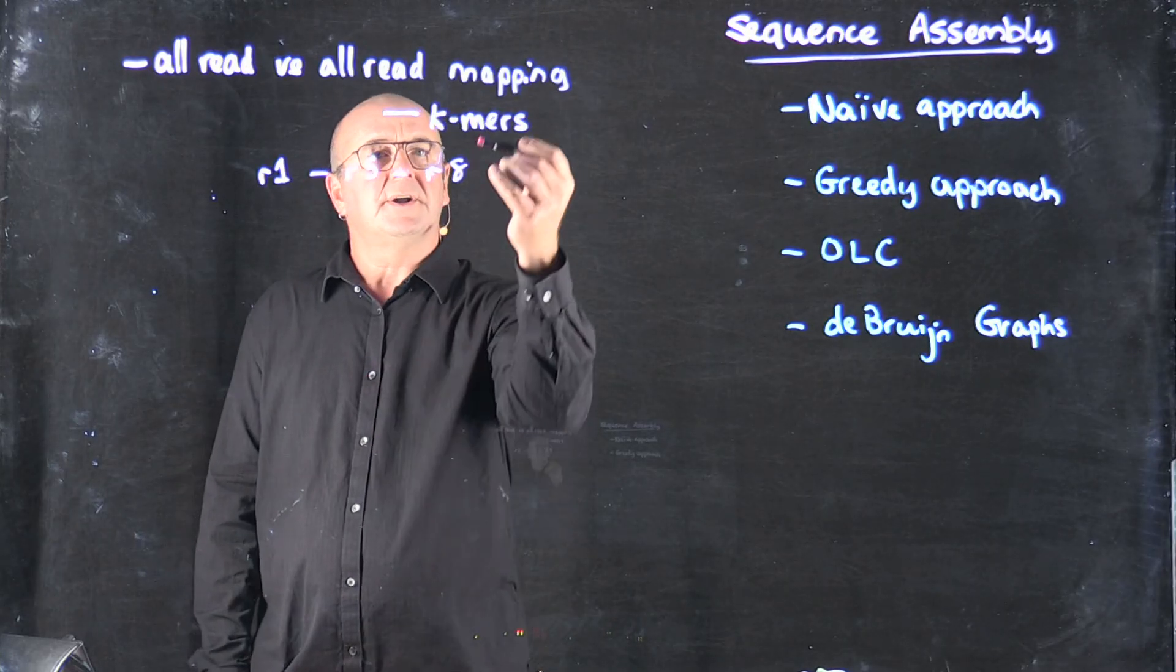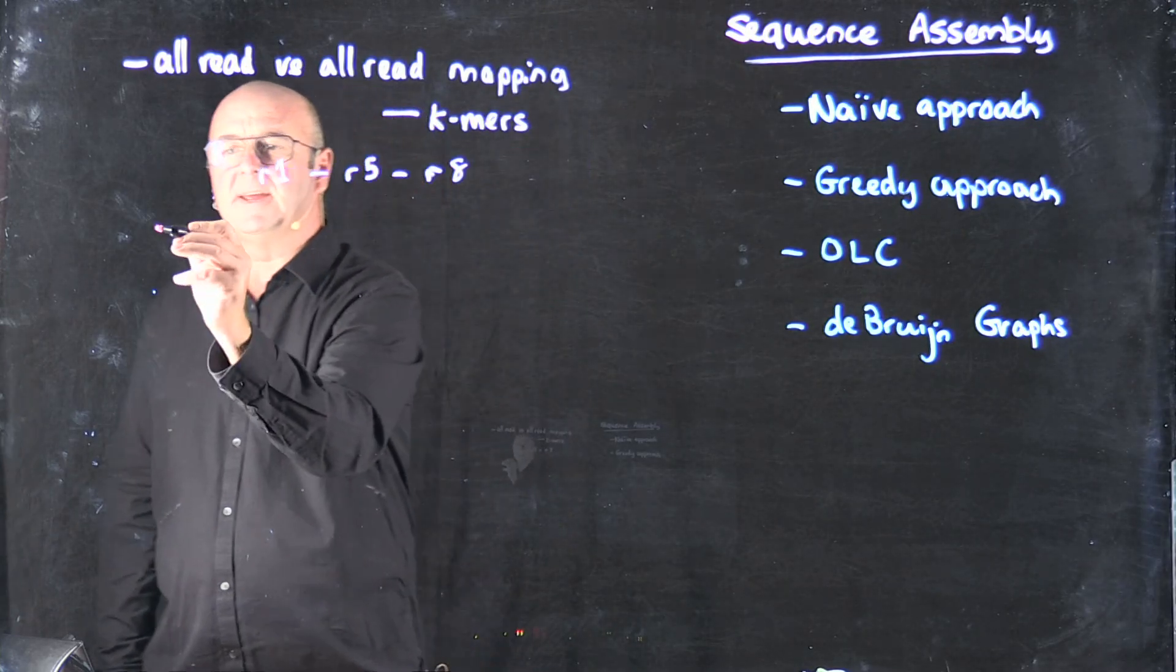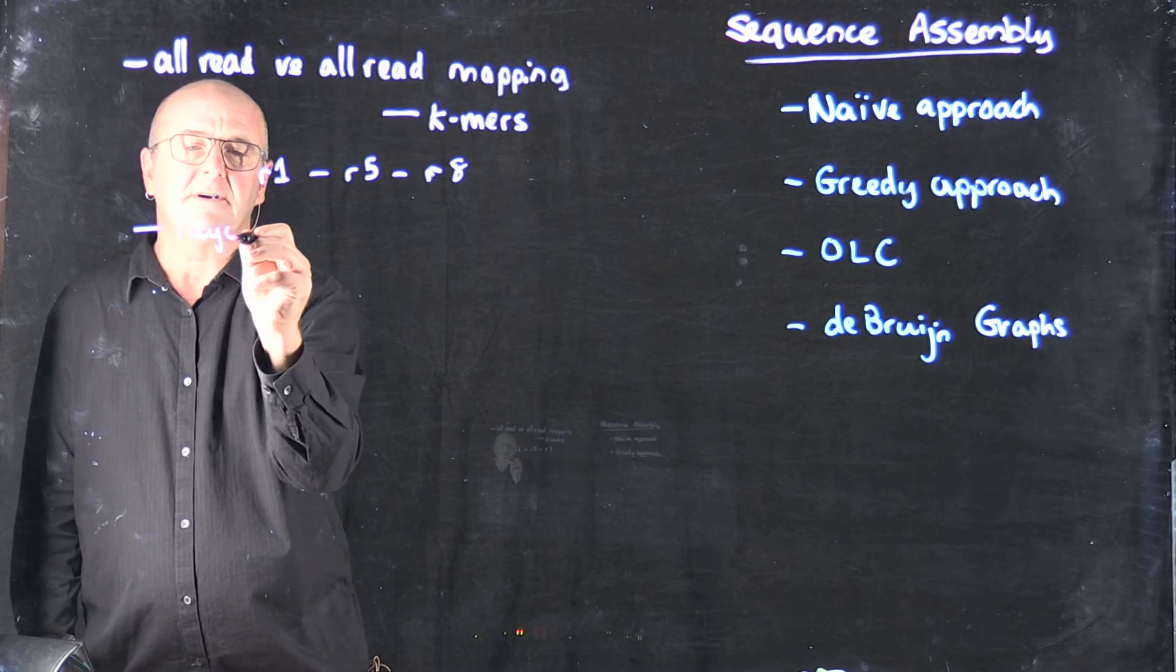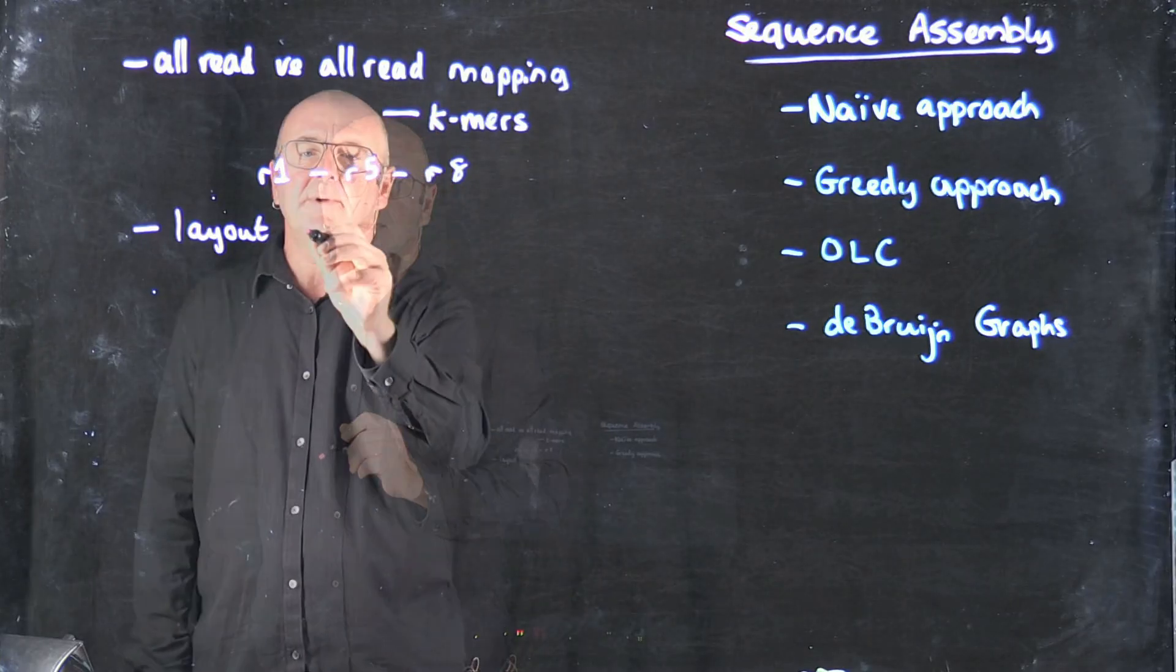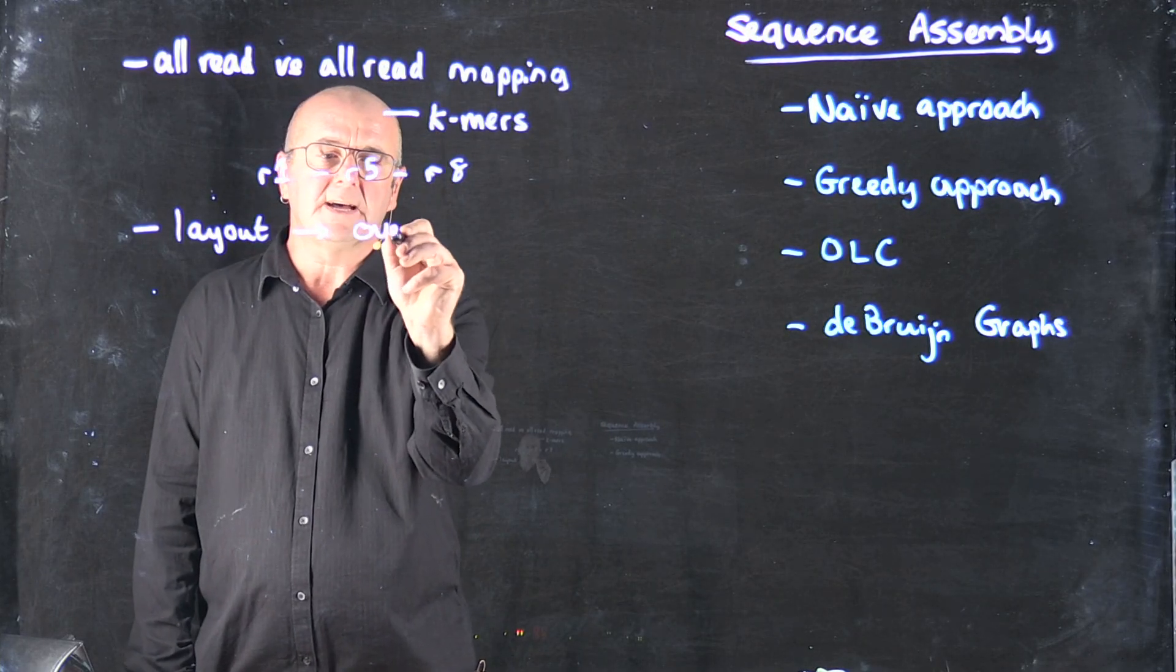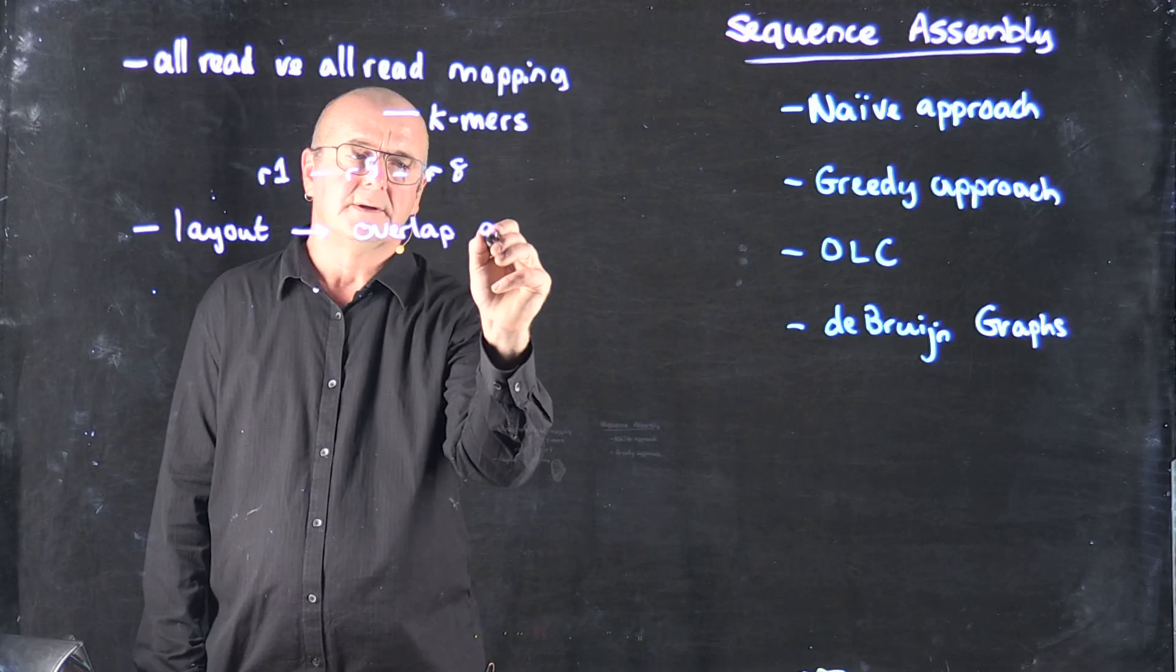Once we've got an approximate mapping, we can generate a layout of exactly how we think the reads go together, and we call that an overlap graph.